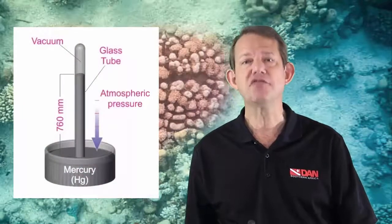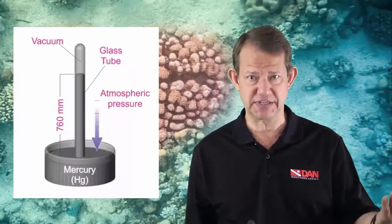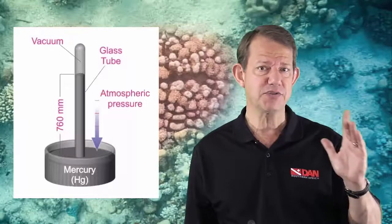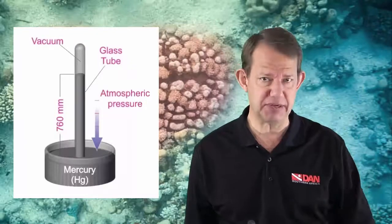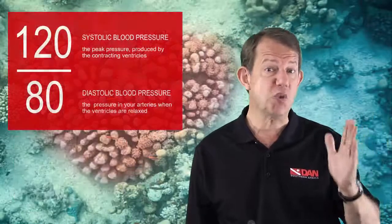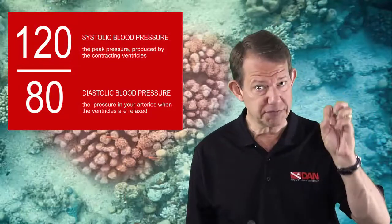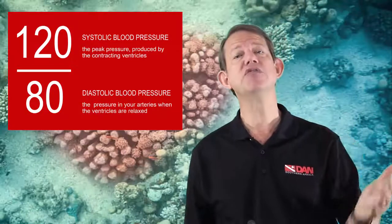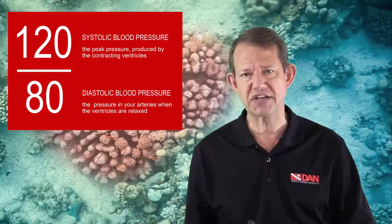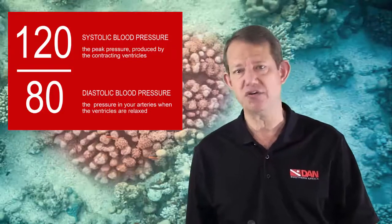The unit of measurement of blood pressure is typically millimeters of mercury, like a barometer. One atmosphere is 760 millimeters of mercury. A typical blood pressure measurement would be 120 millimeters of mercury when the heart is pumping over 80 millimeters of mercury, so this is often referred to as 120 over 80.